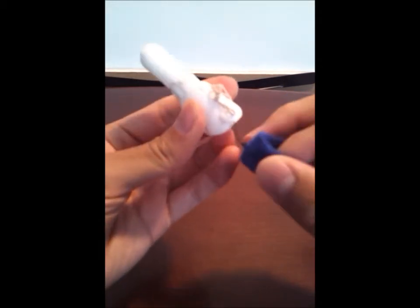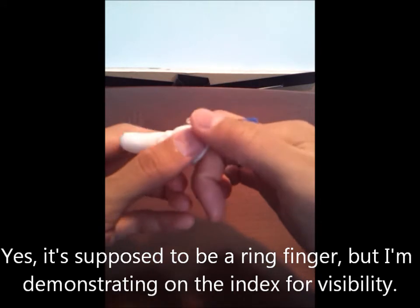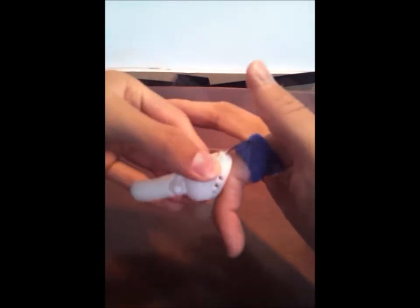Extension is actuated by another cord attached to a rubber band. Once the finger is in place, the flexion cord is pulled every time the middle joint bends.